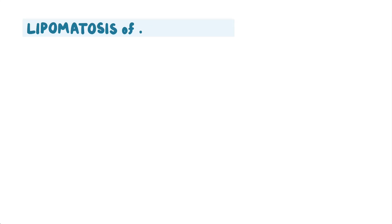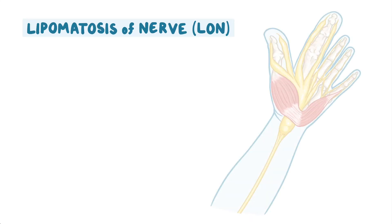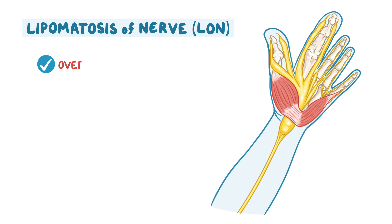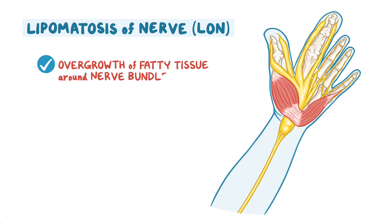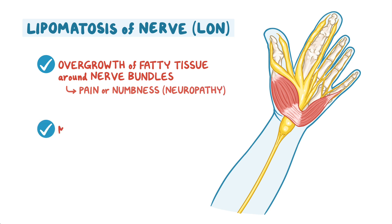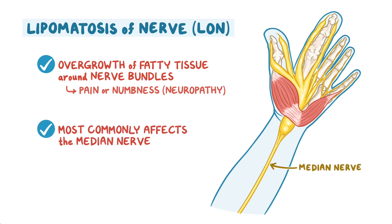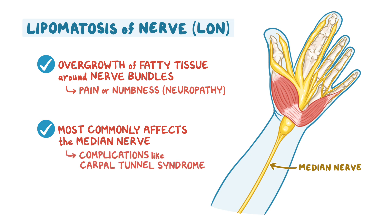In lipomatosis of nerve, or LAWN, there is overgrowth of fatty tissue around nerve bundles causing pain or numbness, called neuropathy. It most commonly affects the median nerve, which controls the forearm, leading to complications like carpal tunnel syndrome.